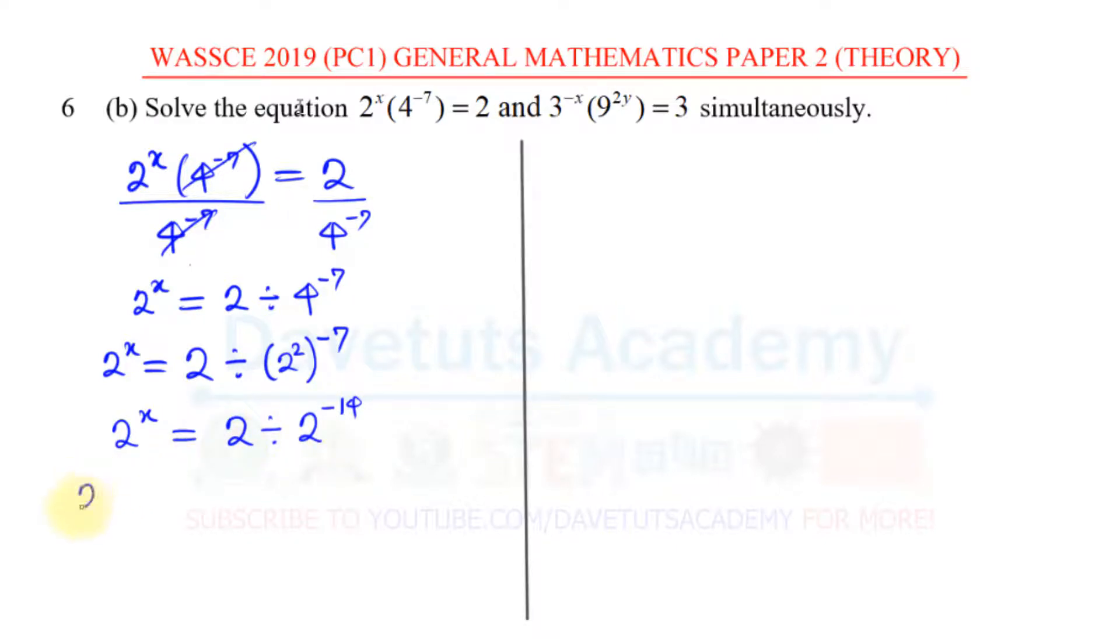Now, by laws of indices, let's say this is 2^x equal to a single 2, the power of that 2 is 1, this division will become minus, then -14 as the other power. Taking the laws of indices: if we have A^M multiplied by A^N, that's the same as A^(M+N).